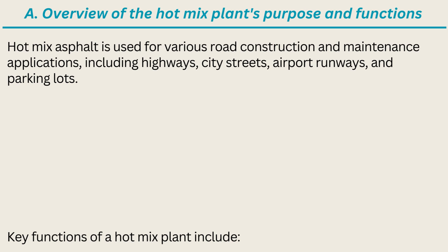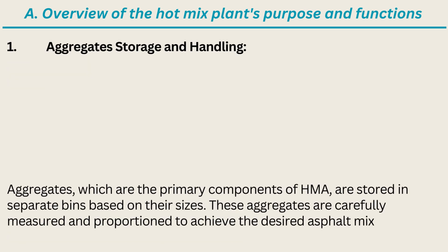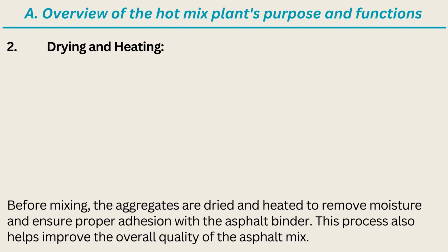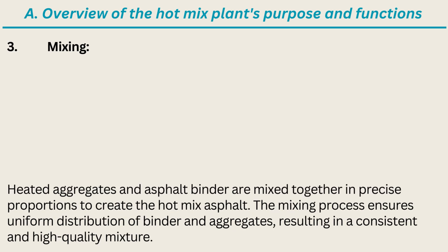Key functions of a hot mix plant include: one, aggregate storage and handling — aggregates, the primary components of HMA, are stored in separate bins based on their sizes and carefully measured and proportioned to achieve the desired asphalt mix characteristics. Two, drying and heating — before mixing, the aggregates are dried and heated to remove moisture and ensure proper adhesion with the asphalt binder.